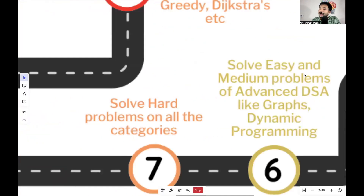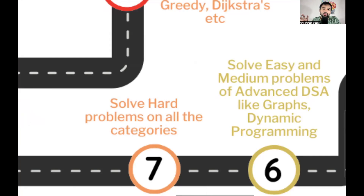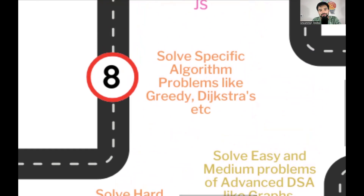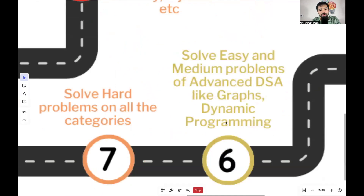Step seven: start solving hard problems across all categories — arrays, strings, stacks, queues, linked lists, trees, and graphs. There should be no particular order, because hard difficulty problems often combine multiple categories — for example, a tree problem requiring dynamic programming, or an array problem involving both graph and tree concepts. You should be in a state of unpredictability and able to tackle any hard problem. Then move on to algorithm-specific problems like greedy techniques and Dijkstra's algorithm.